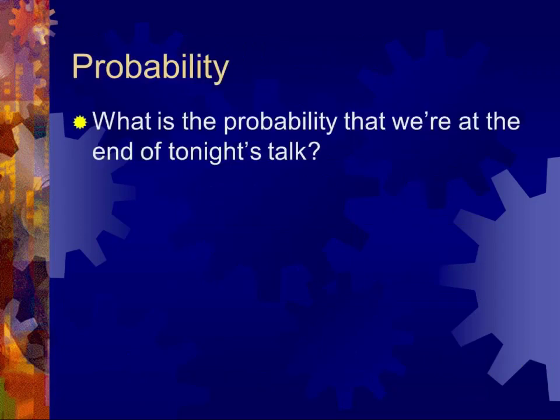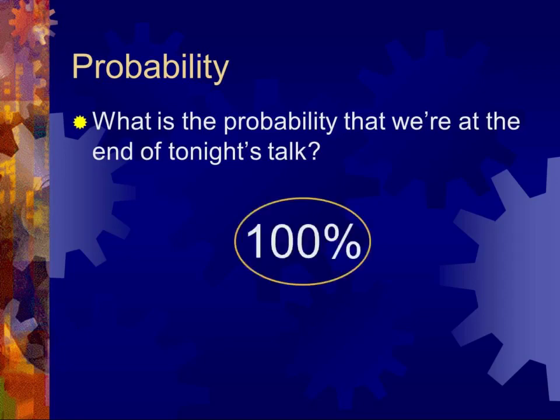That concludes the presentation tonight, which covered a brief review of Part 1 and included new elements: ANOVA, correlations, and epidemiological tests such as sensitivity, specificity, positive predictive value, negative predictive value, relative risks, and odds ratios. Having learned all this — what do you think the probability is that we're at the end of the talk for tonight? You got it. Thank you very much.